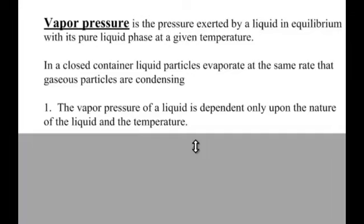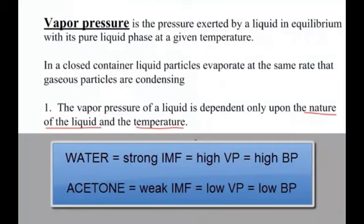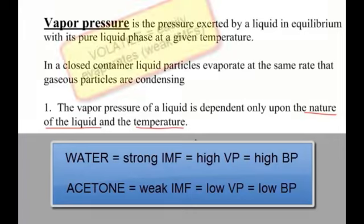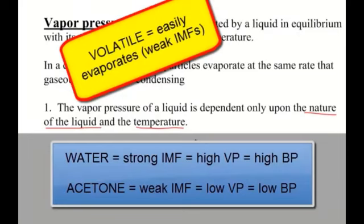Vapor pressure only depends on two things: what the liquid is — whether it's water, acetone, or an alcohol — and the temperature. Some things are more evaporative than others because of their intermolecular forces. Water has pretty low vapor pressure at normal temperature because it doesn't evaporate quickly, due to its very strong dipole-dipole forces with hydrogen bonding. Something like acetone, which only has dipole-dipole forces, evaporates very easily — we say it is volatile — because its intermolecular forces are pretty weak.